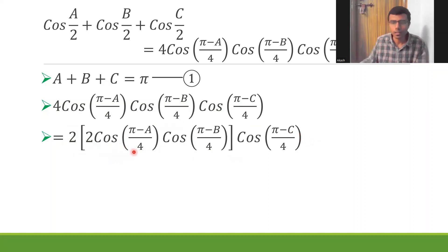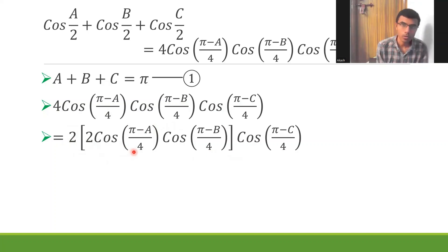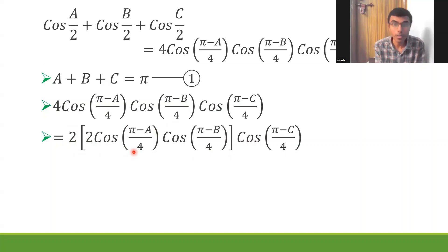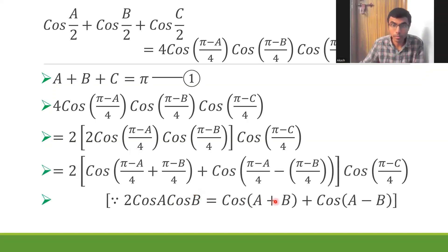You must have used this formula quite often: cos(A+B) + cos(A−B) = 2 cosA cosB. Here we are going to use the reverse: 2 cosA cosB = cos(A+B) + cos(A−B).